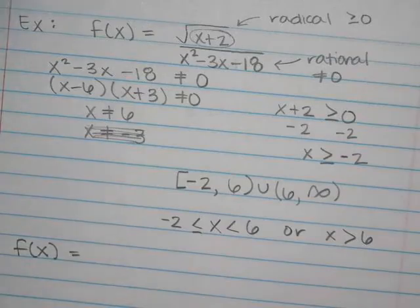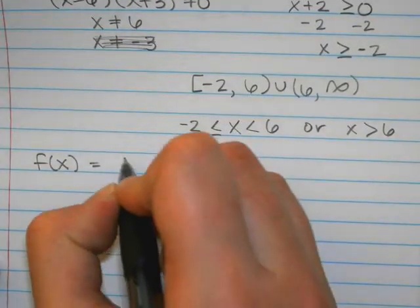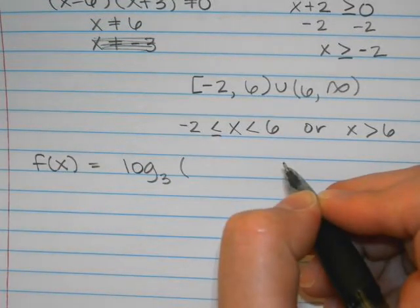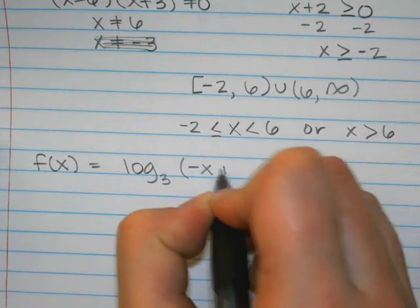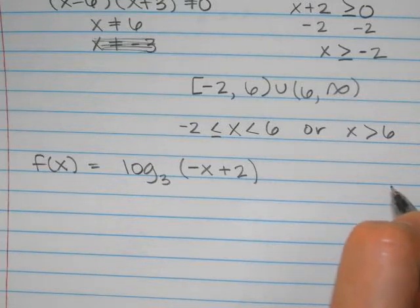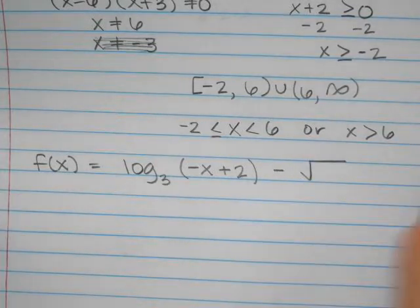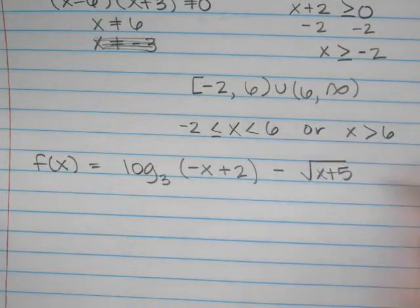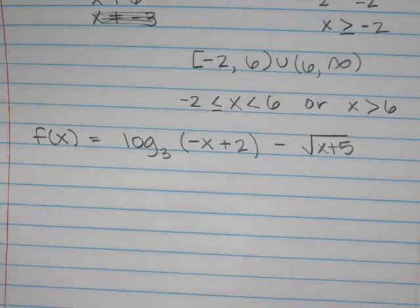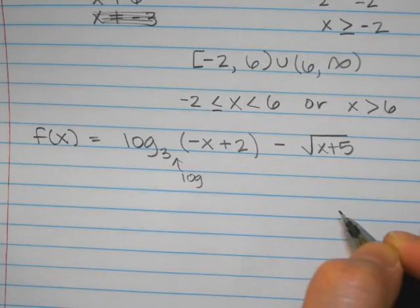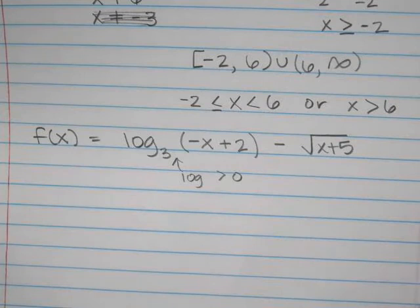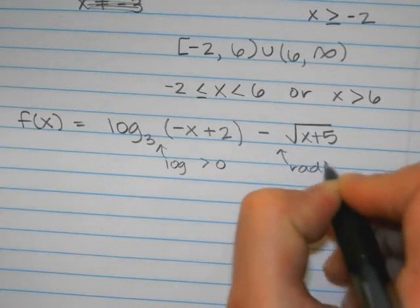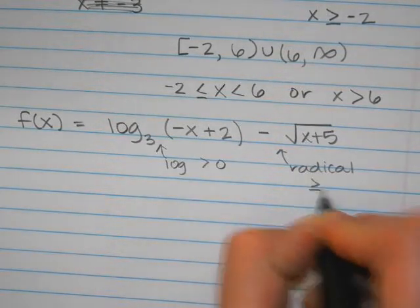So we'll say f of x equals log base 3 of negative x plus 2, minus square root of x plus 5. What type of functions do we have here? We have a log. What do we remember about logs? It has to be greater than zero. And what do we remember about radicals? Greater than or equal to zero.